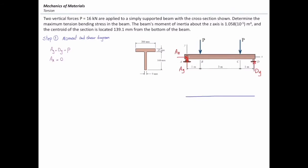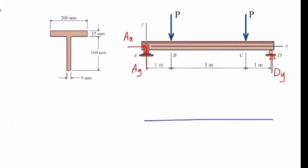To construct the shear diagram, we start from the left end. The reaction support at the left end is equal to P, which in this case is 16 kN acting upward, so the shear force at the left side is positive 16 kN. From point A to B there is no external force, so the shear force is constant. At point B, force P is acting downward, causing a jump in the shear diagram that makes the shear force at that point equal to zero.